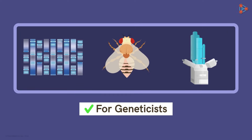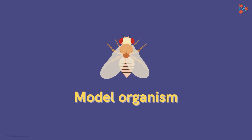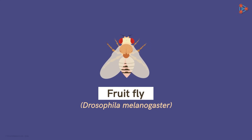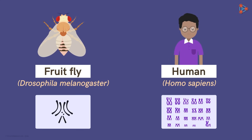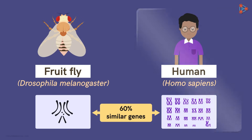Sounds hard to believe, but these fruit flies are used as model organisms in genetics. Did you know that the common fruit fly Drosophila melanogaster and humans have genes that are almost 60% similar to each other? Just a total of 8 chromosomes in this tiny creature contains around 60% genes similar to humans.